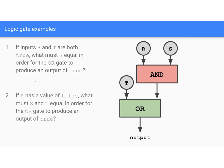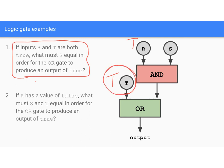Here's the sort of thing you'll see on the AP test — basic calculations with AND gates and OR gates. If inputs R and T are both true, what must S equal for the OR gate to produce an output of true? Since T is already true, it doesn't really matter what the AND gate produces. Even if S were false, the AND gate returns false, but the OR gate has T as true — so the output is still true.